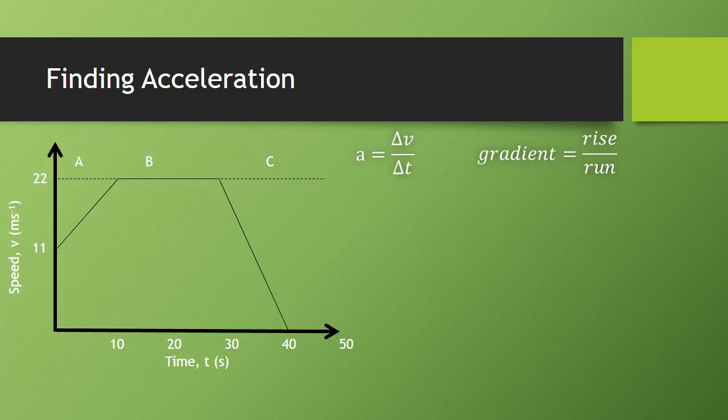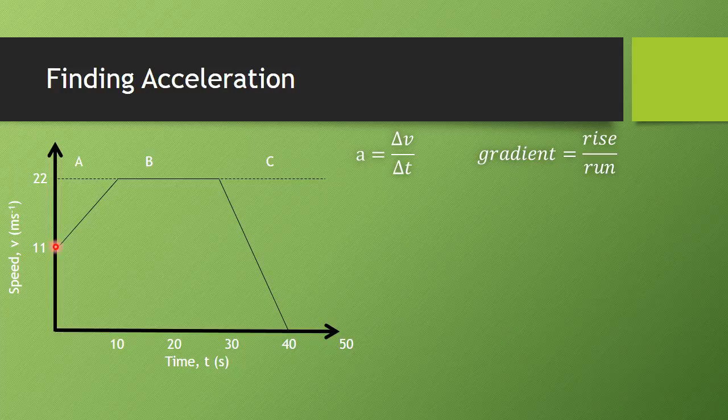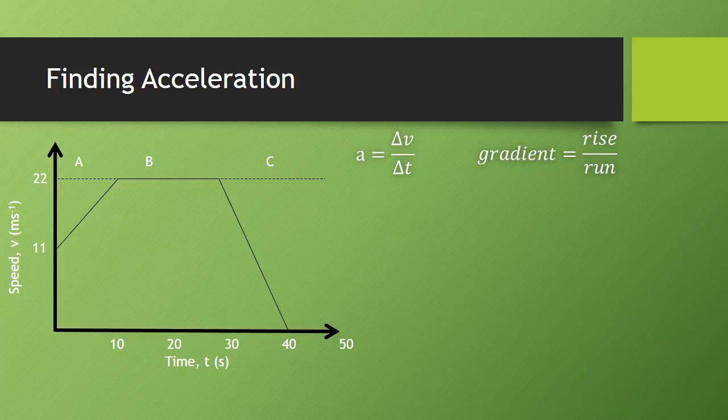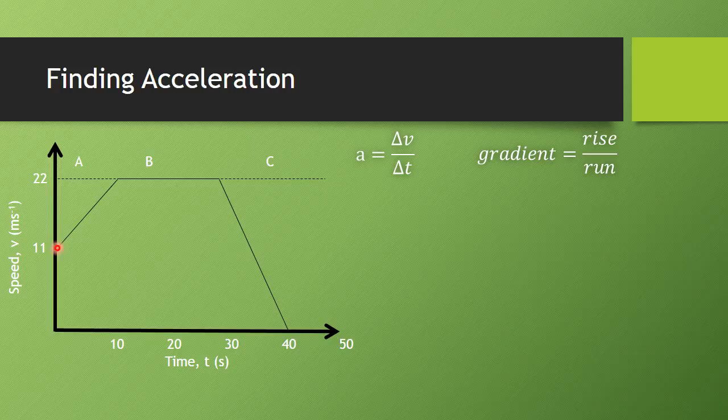If we look at section A, we can see it starts at 11 meters per second and increases its speed at a steady rate to 22 meters per second. In this case, the change in speed is from 11 up to 22, which matches up with our rise, and our change in time is from 0 to 10, which matches up with our run.